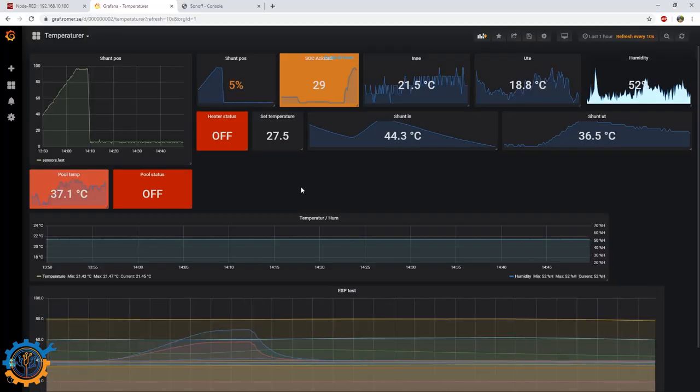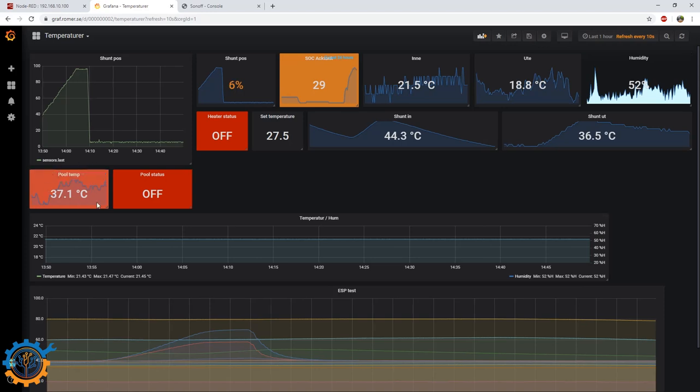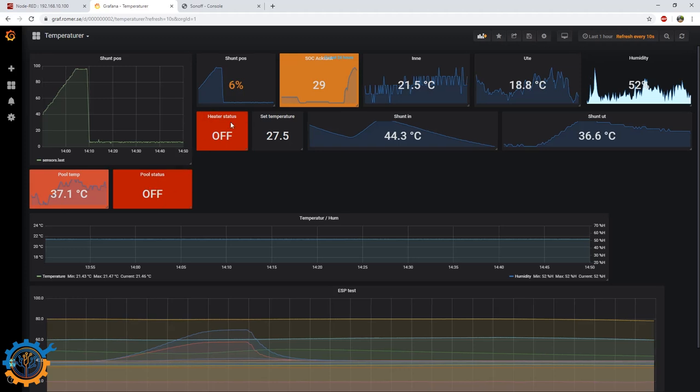This is one of my dashboards I have. I have many of them. As you can see here I have the pool temperature itself. It's currently at 37.1 degrees and the pool status is off. That means it will not circulate any water to the heating system that also is off. Basically I can show off the values that I get here. I think that concludes everything.